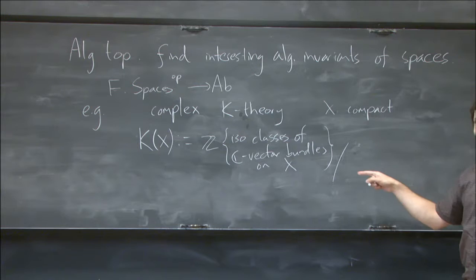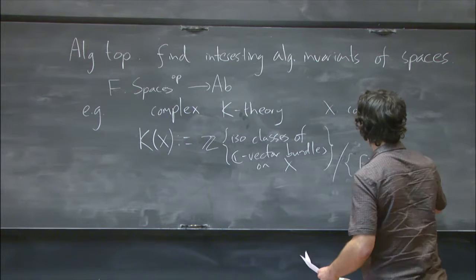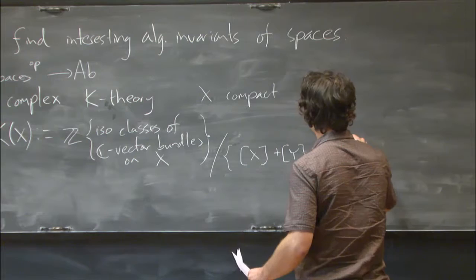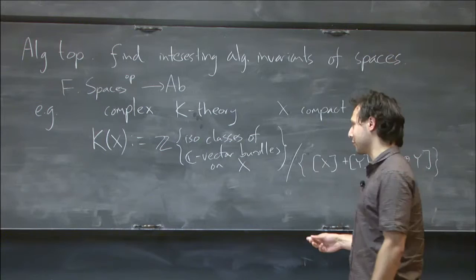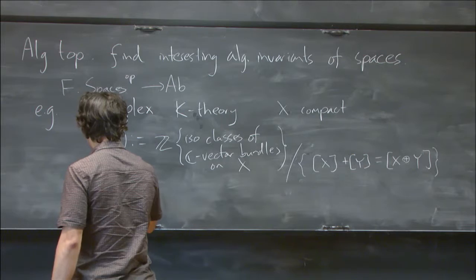And then I'll quotient it out by the relation that addition of vector bundles is addition in this group. So the class of X plus the class of Y has got to be equal to the class of X direct sum Y. And that's a cohomology invariant functor because I can pull back vector bundles, even takes values in commutative rings because I can take tensor products of vector bundles. This is the definition for compact spaces.